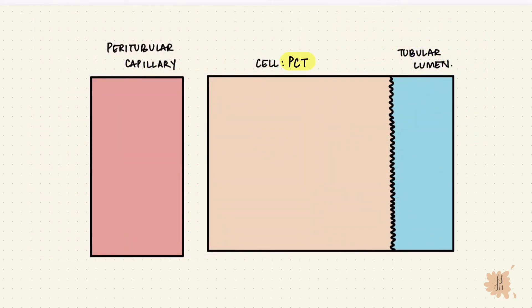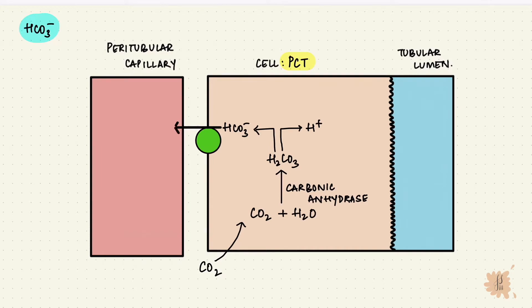Now back to the PCT cell. Another substance that gets reabsorbed is bicarbonate. This is important for acidification of urine. Carbon dioxide diffuses into the cell and binds to water. With carbonic anhydrase, it becomes carbonic acid, which then dissociates into hydrogen ions and bicarb ions.